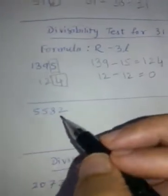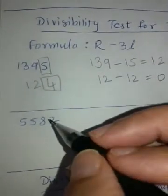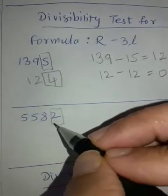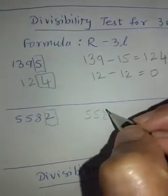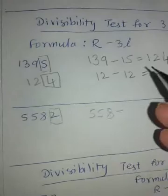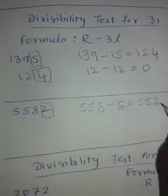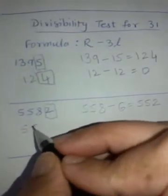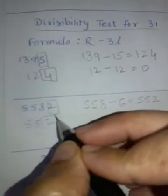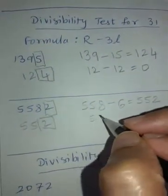5582, remaining number is 558, minus 3 times 2 is 6, 552. Remaining number is 55, 3 times 2 is 6, which is 49.